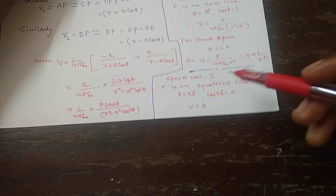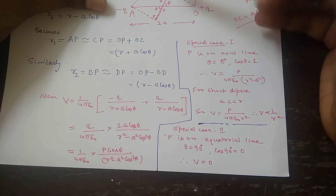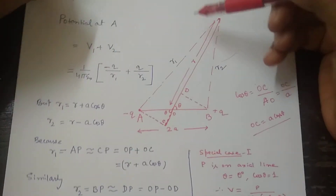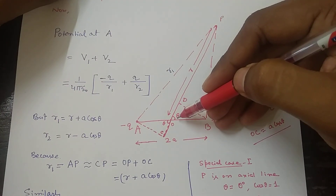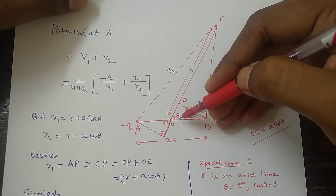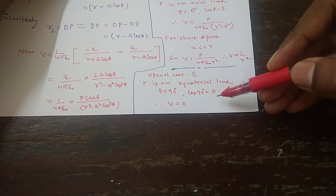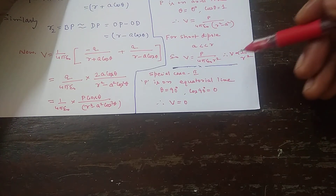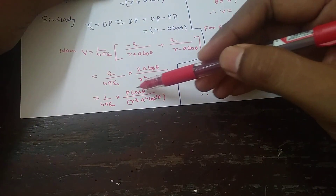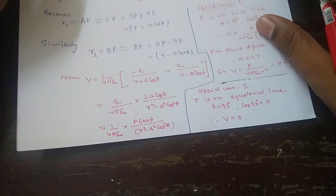Special case 2: if point P is on the equatorial line, then theta equals 90 degrees. Putting cos 90 equal to 0 into the expression makes the numerator zero, and the whole expression becomes zero. So the potential at any point on the equatorial line of a dipole is zero. Thank you for watching this video.